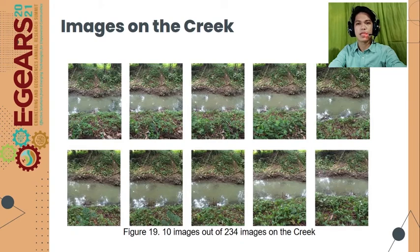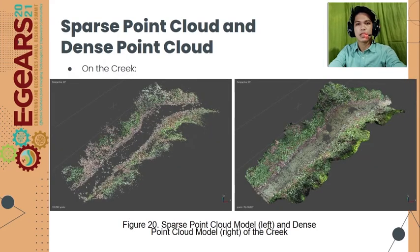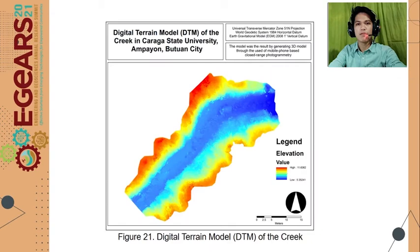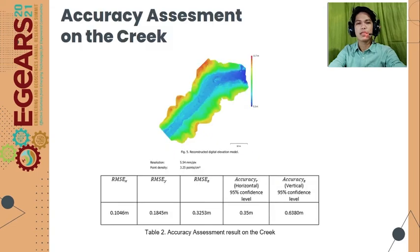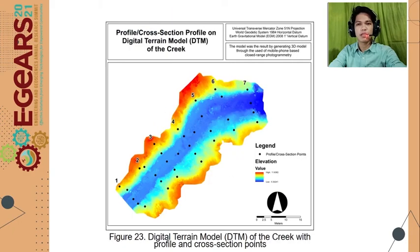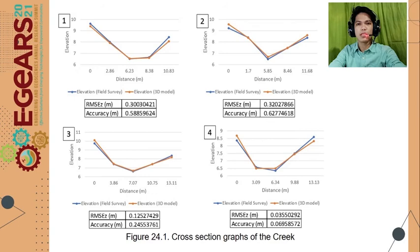For the result of the actual study area, 234 images were gathered from the creek. The generated sparse point cloud and dense point cloud of the creek were used to create the digital terrain model showing the highest and lowest elevations. The generated DEM of the creek has a spatial resolution of 5.54 mm per pixel and a horizontal accuracy of 0.35 meter and vertical accuracy of 0.638 meters respectively at 95% confidence level. The cross-section profile of the creek shows the difference in elevation between field survey and 3D model extracted elevation.